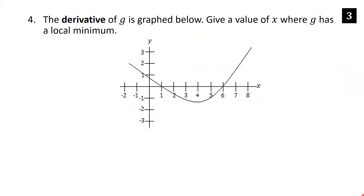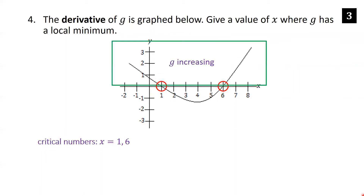The derivative of g is graphed below; give a value of x where g has a local minimum. Keep in mind this graph is of the derivative of g, not of g itself. The critical numbers are where the derivative is zero, so since this is a graph of the derivative, the critical numbers are at x equals 1 and x equals 6, where the graph hits the x-axis.